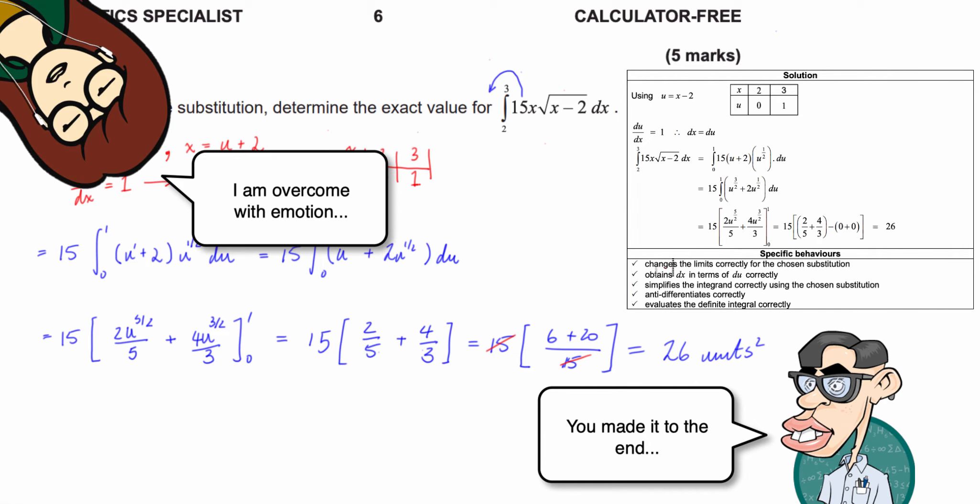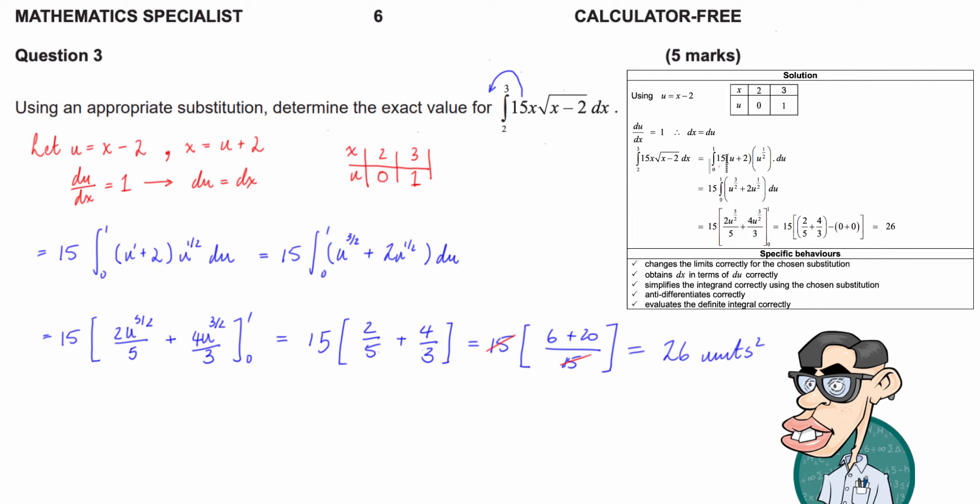Great so let's see how we did. So the first mark comes if we change the limits correctly for the chosen substitution. So they've got the limits set at 0 and 1 so we're going to get a mark for that. So that's one mark. Obtains dx in terms of du correctly. Cool so we've got du dx equals 1 so therefore dx equals du. Great so that's 2 so we can have that mark as well. We've got simplifies the integrand correctly using the chosen substitution. Okay so that means that we have to end up with something that looks like this. So what have we got? 15 integral from 0 to 1 of that integrand du. Cool so that's where our third mark comes. Three.